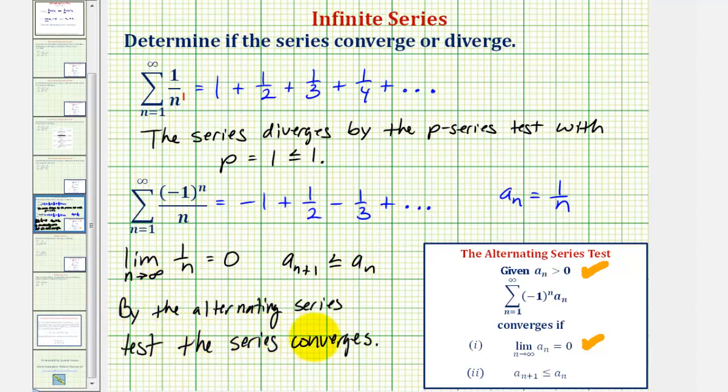This is somewhat of an interesting outcome. Notice how the basic harmonic series diverges, but the alternating harmonic series converges. And whenever we have an alternating series that converges, but the non-alternating series diverges, we can say the alternating series is conditionally convergent, which we'll learn more about in the next section.